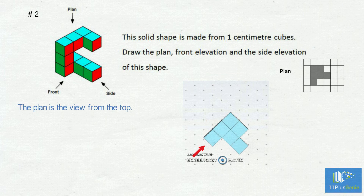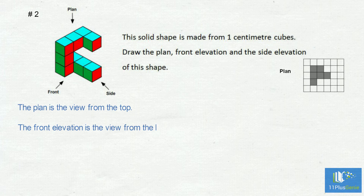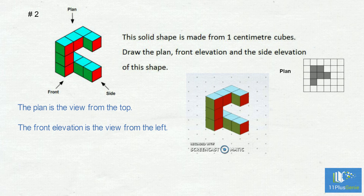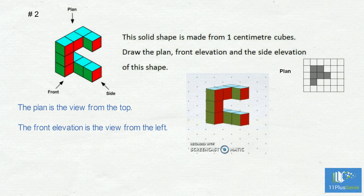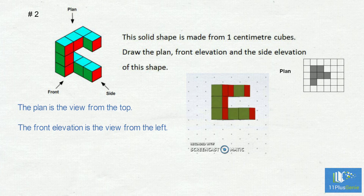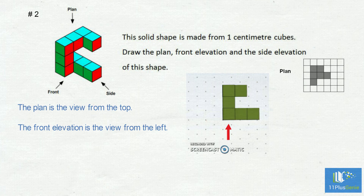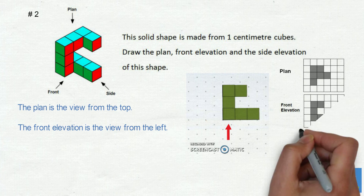For the front elevation, from left to right there are three blocks on top of each other, then one block at the bottom and one block at the top with an open gap between them, and then one block. The front elevation looks like this.